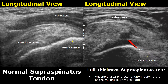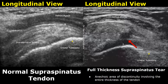This is a case of full thickness supraspinatus tear. In a full thickness tear, we will find an anechoic area of discontinuity that involves the entire thickness of the tendon. When we see this anechoic area involving the full thickness of the tendon, we can call it a full thickness tear.